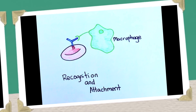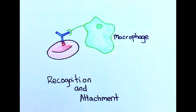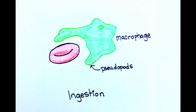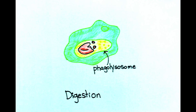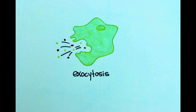The macrophages bind with the C3B on the antigen-antibody complex, and the phagocyte begins to engulf the foreign cell with extensions from its cell membrane called pseudopods. The cell is completely engulfed in what is now called a phagosome. It binds with lysosomes within the phagocyte, and the resulting vacuole is now referred to as a phagolysosome. The lysosomes digest the foreign cell and expel the cell debris through the phagocyte's cell membrane in a process called exocytosis.